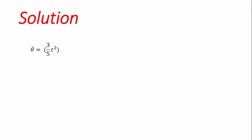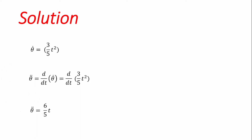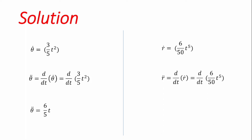Next, we find θ̈, which is the second time derivative of θ, or the time derivative of θ̇. Differentiating θ̇ = (3/5)t² with respect to time gives θ̈ = (6/5)t. Then we find r̈, the time derivative of ṙ. Differentiating ṙ = (6/50)t⁵ gives r̈ = (30/50)t⁴.